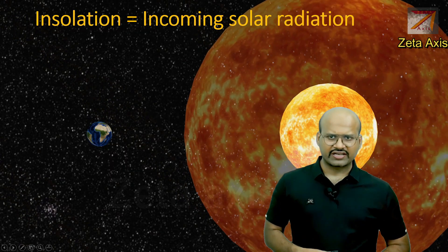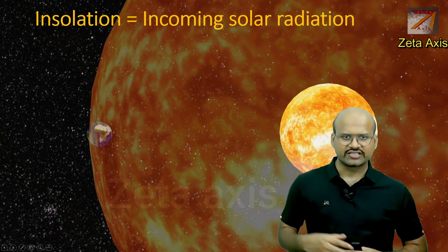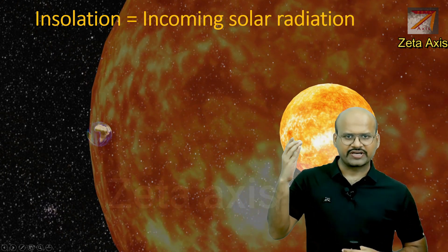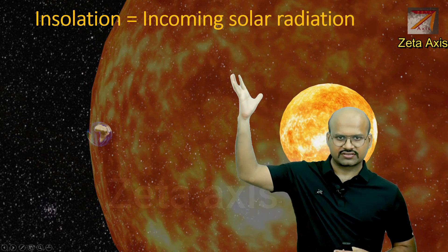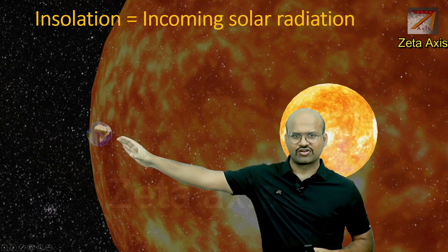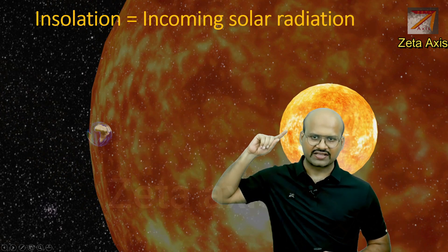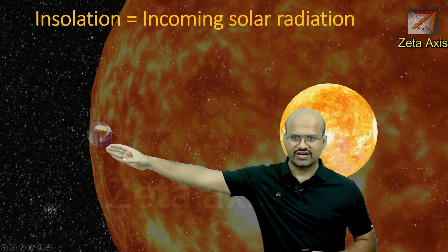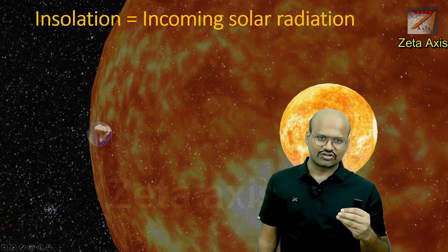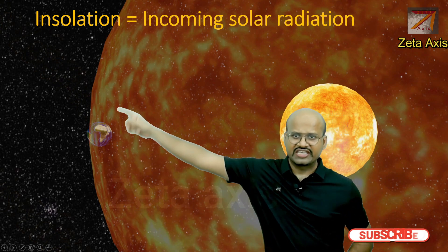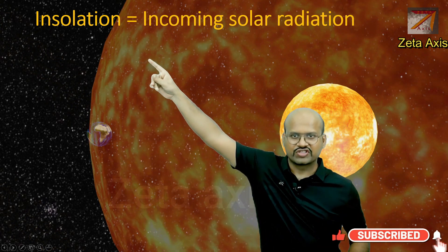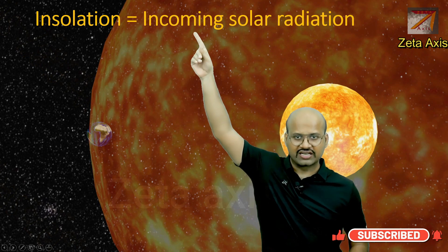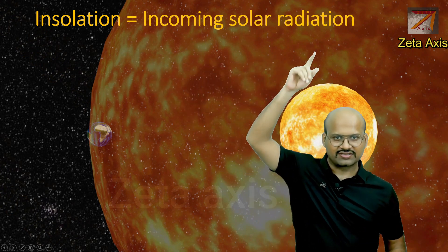The heat received by Earth is mainly from the sun. The sun emits solar radiation in all directions, so only a very small fraction of the total energy released by the sun reaches Earth. This amount of radiation that reaches Earth is called insolation, which is an acronym for incoming solar radiation.